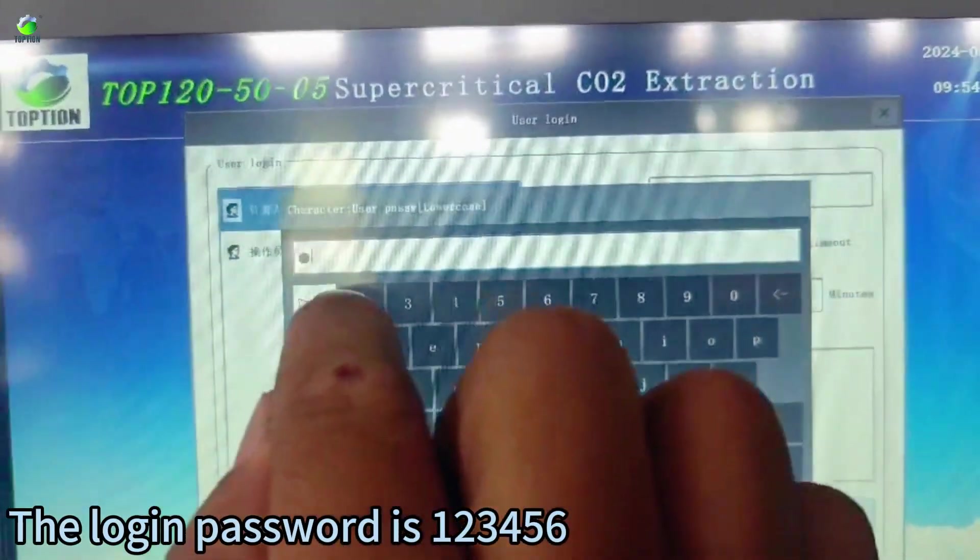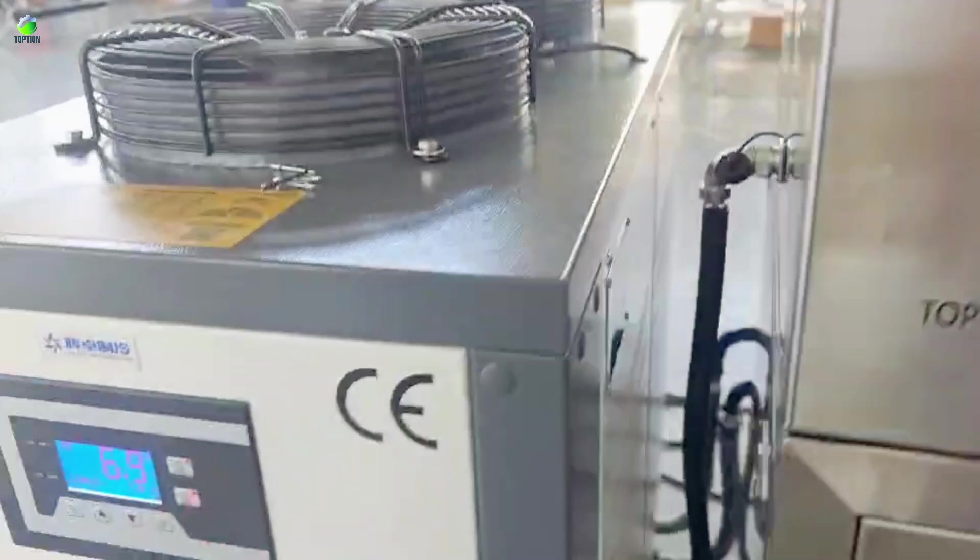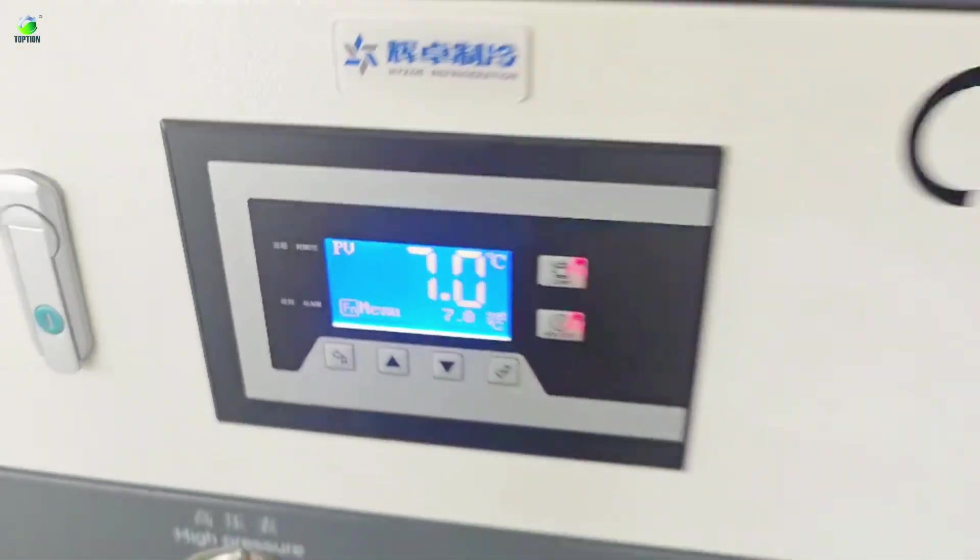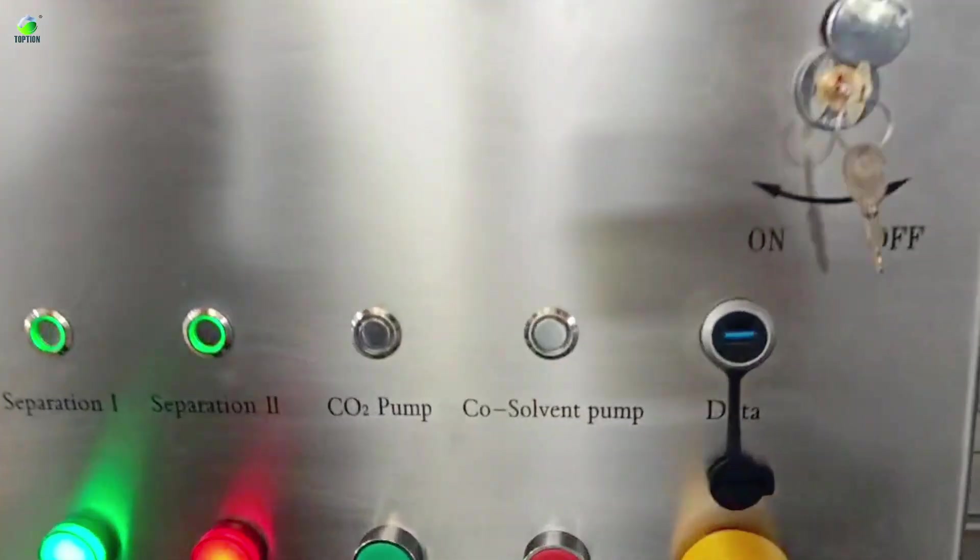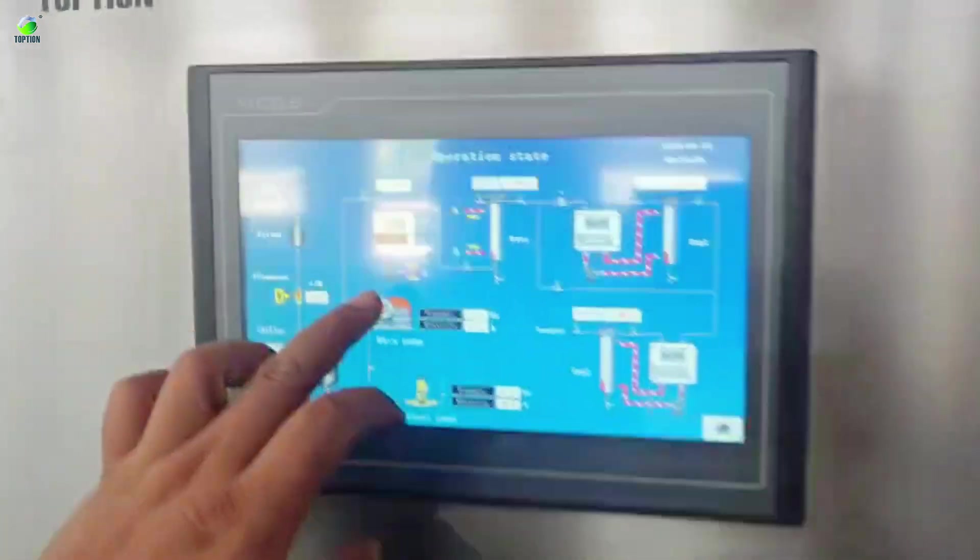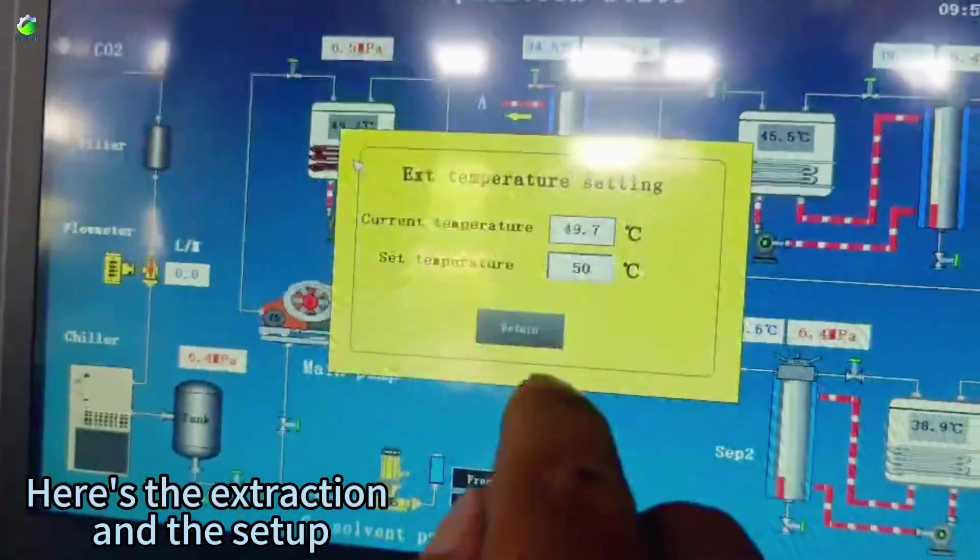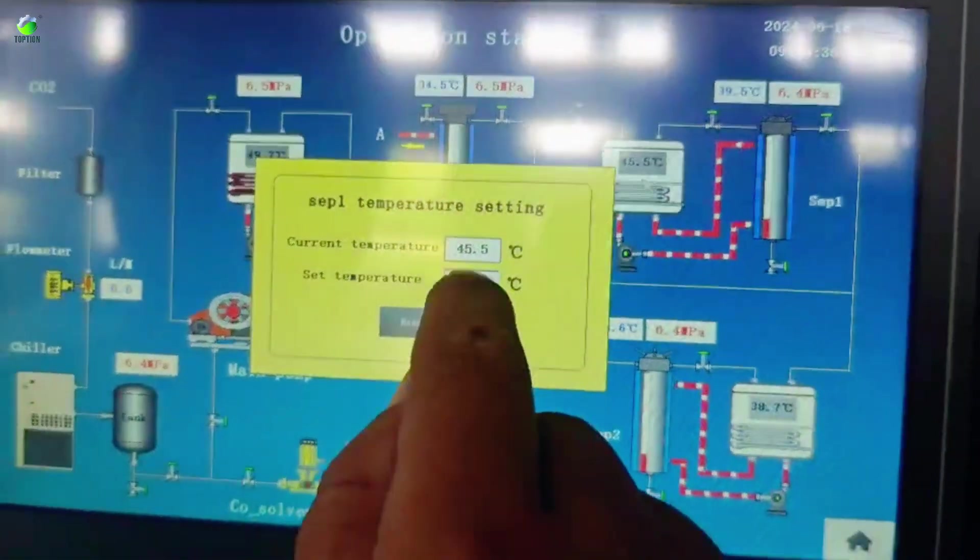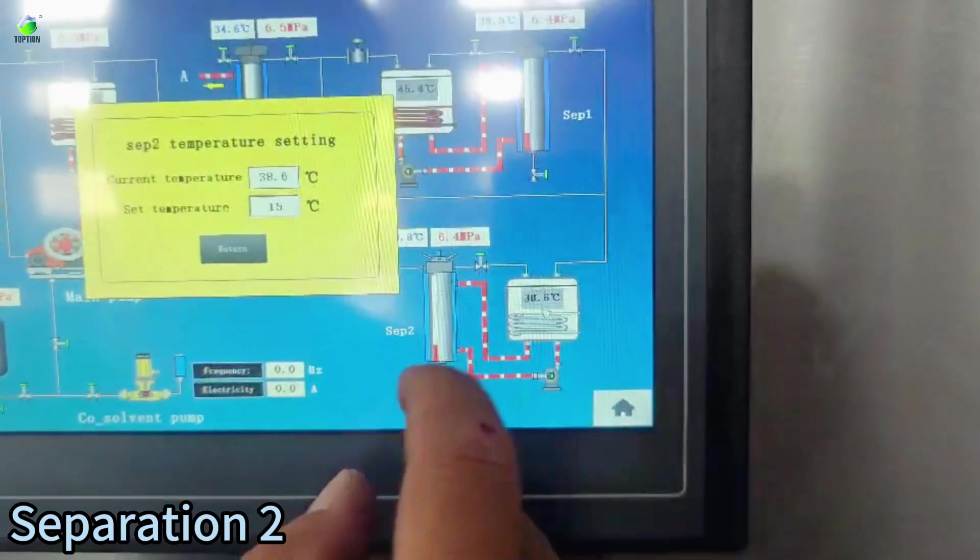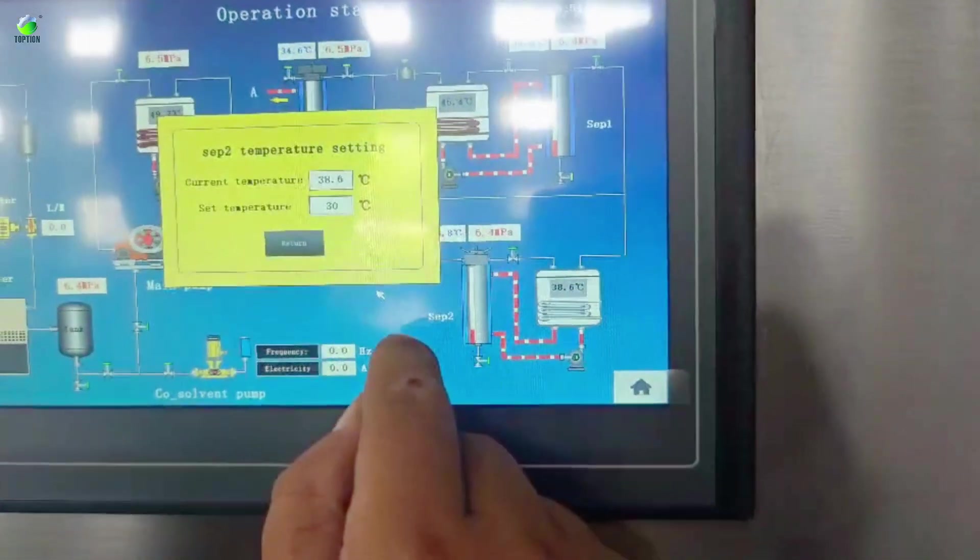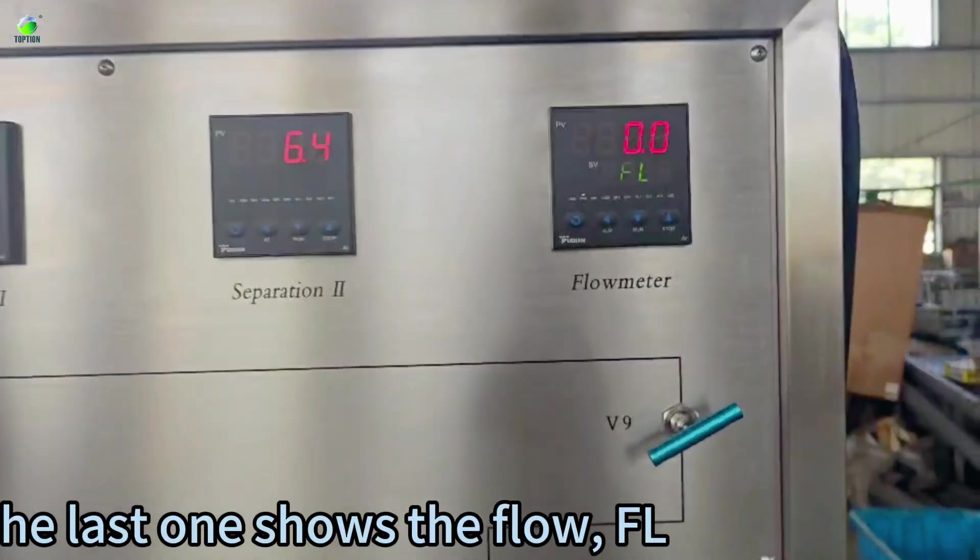The login password is 12356. Heating. Setting the temperature required for extraction. Here's the extraction and the setup. Separation arc. The top row shows the pressure. The last one shows the flow.